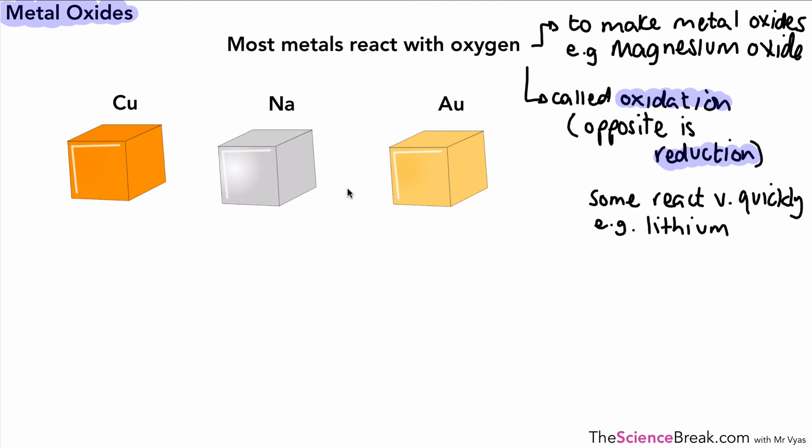Here are three other examples of metals: copper, sodium, and gold. The reaction of copper with oxygen is shown here, sodium is shown there, and the last one with gold.